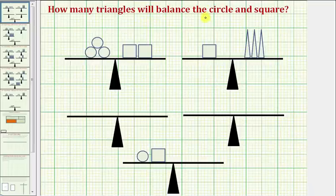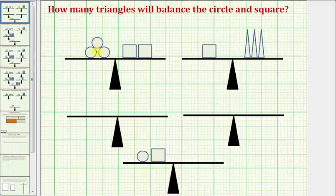We're asked how many triangles will balance the circle and square shown here at the bottom, and we're given that three circles balance with two squares, and one square balances with three triangles.